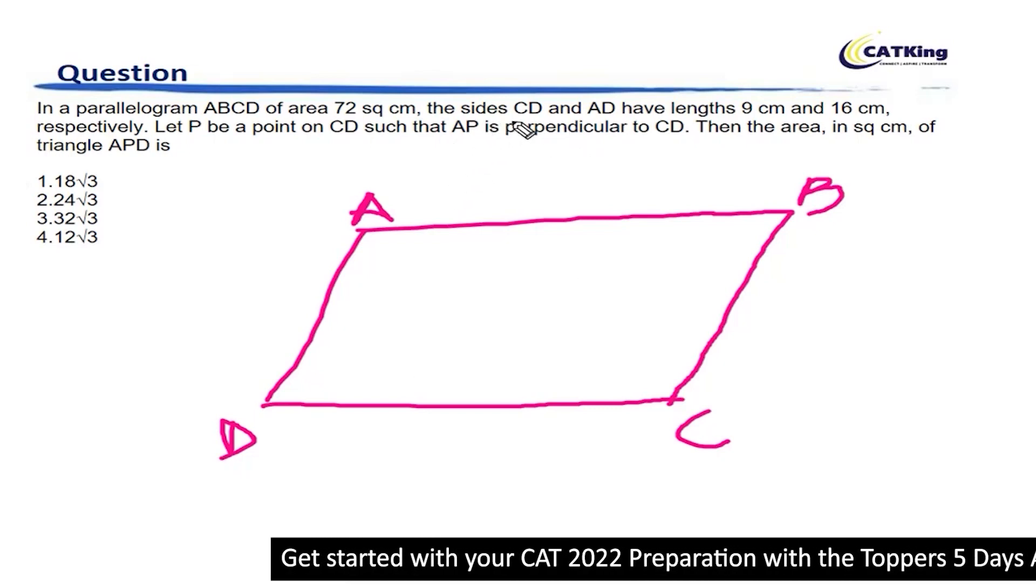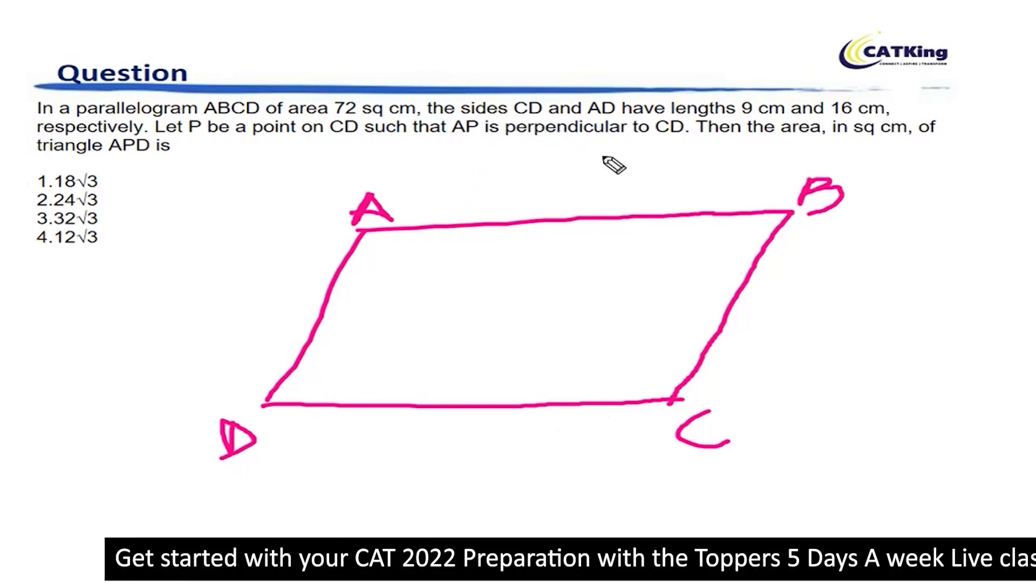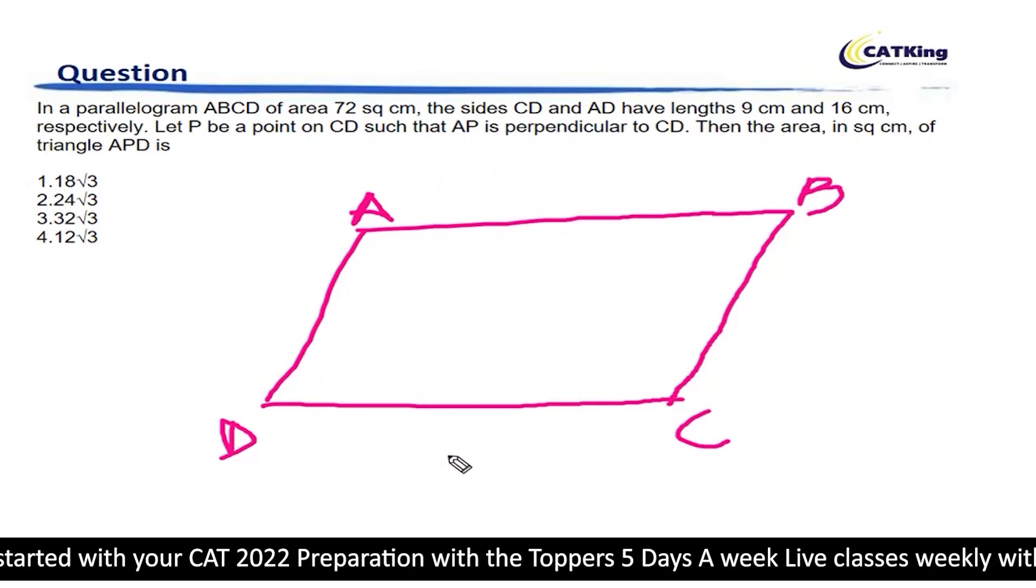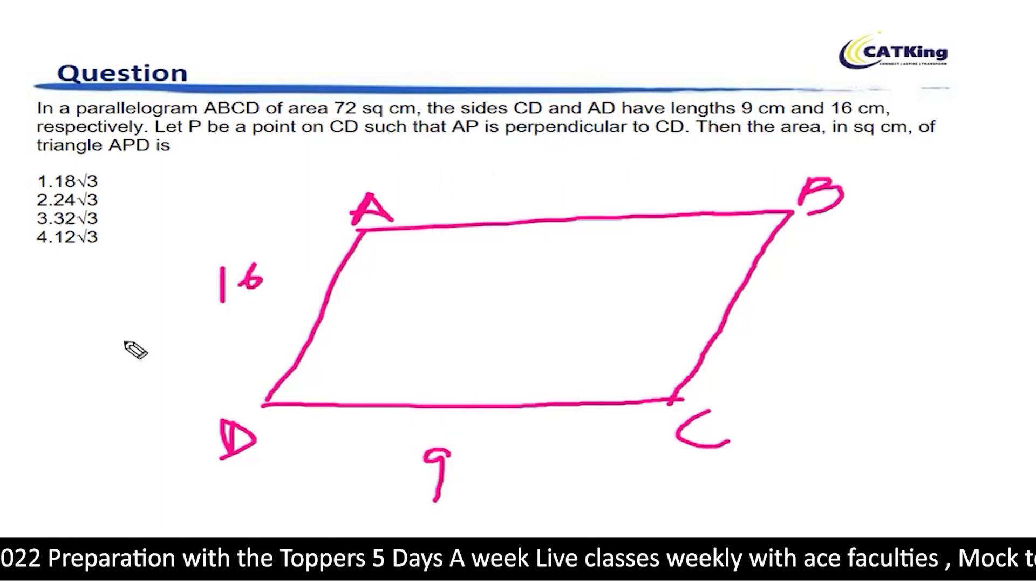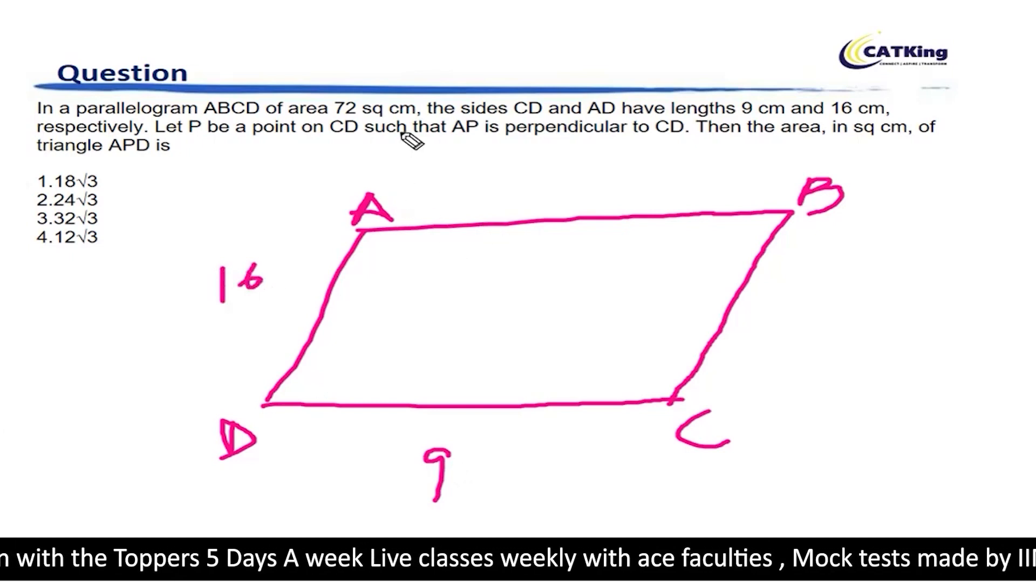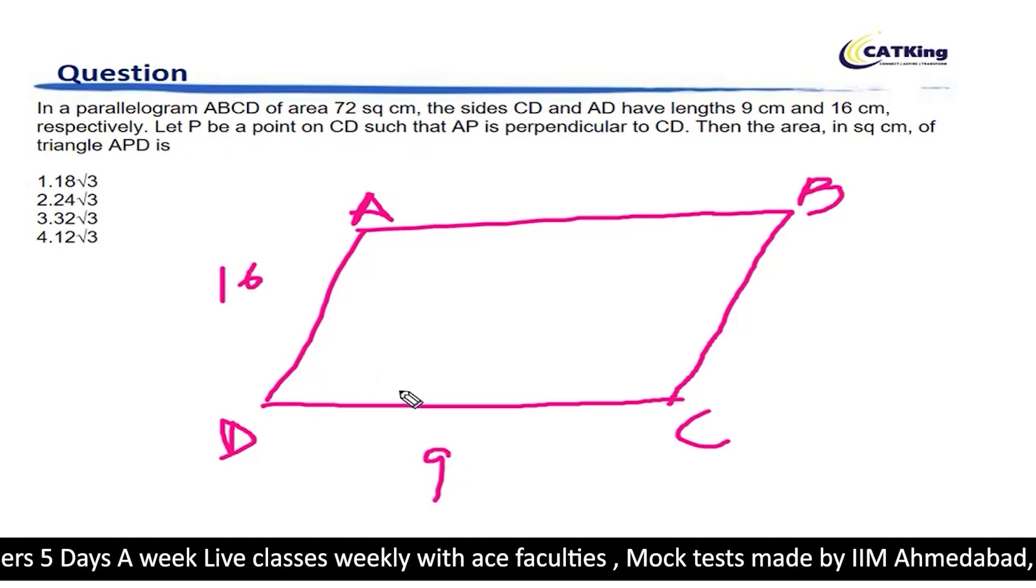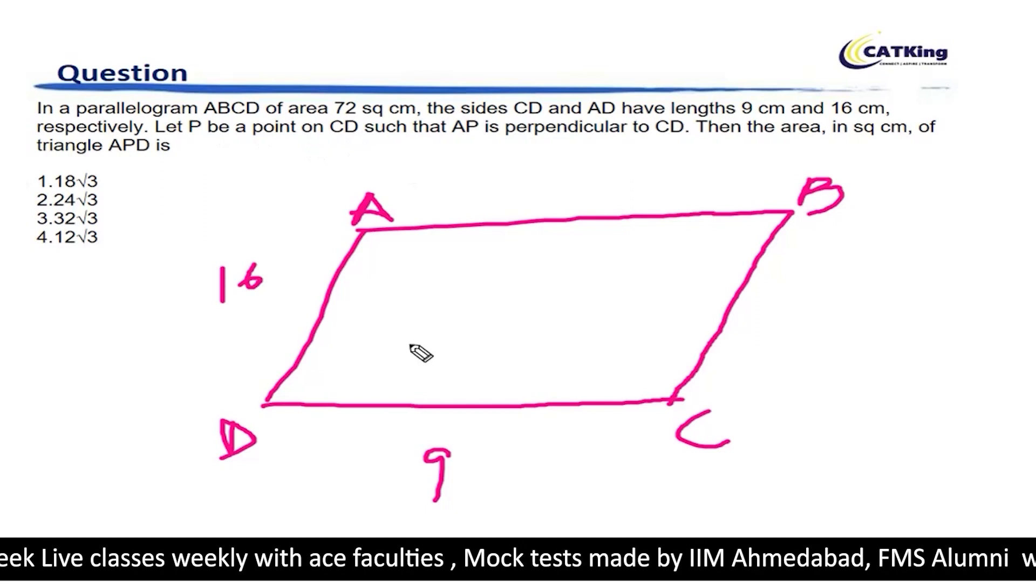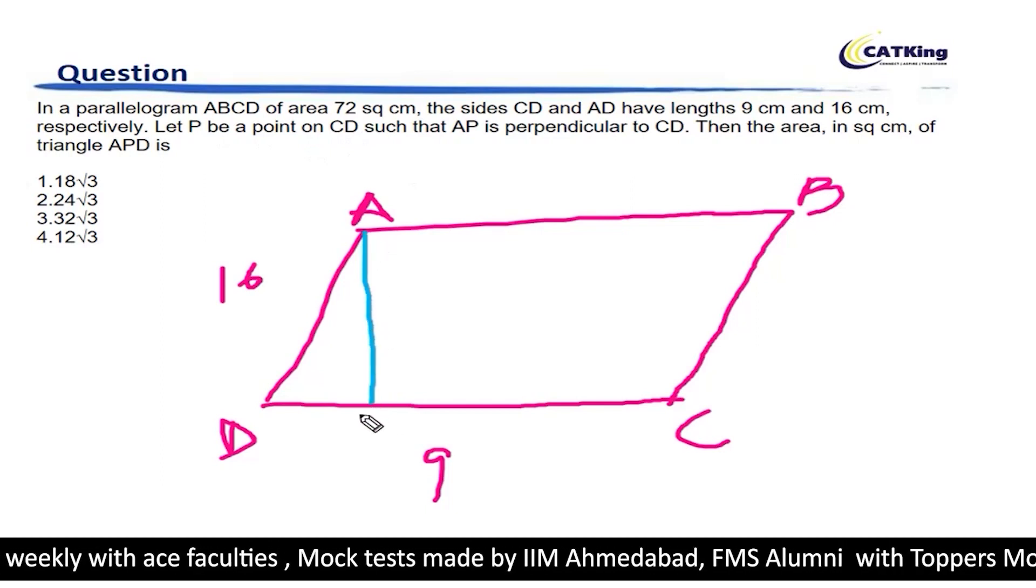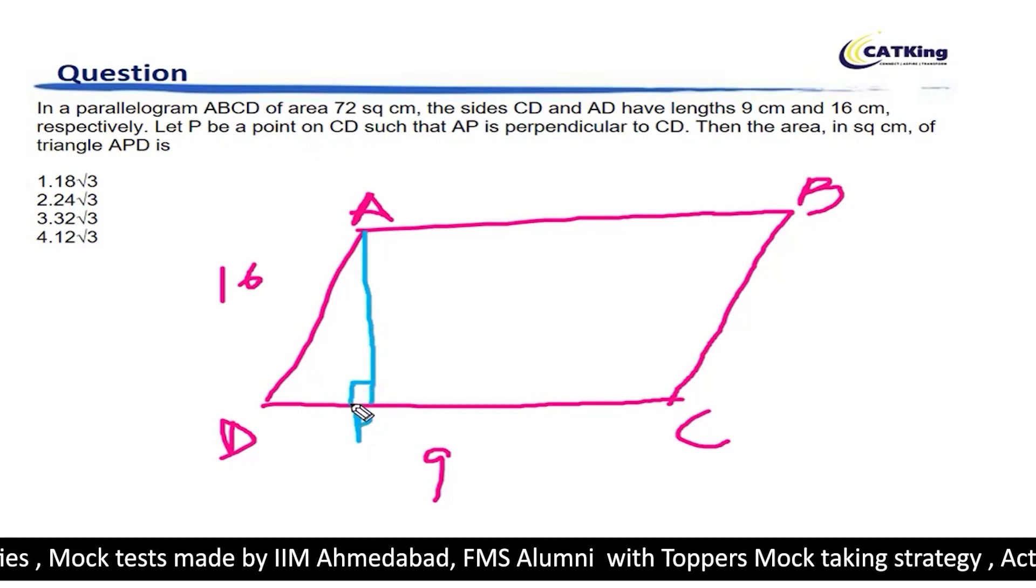Now, the sides CD and AD have lengths 9 and 16. CD is 9, AD is 16. Let P be a point on CD such that AP is perpendicular to CD. I draw here P. AP is perpendicular to CD.